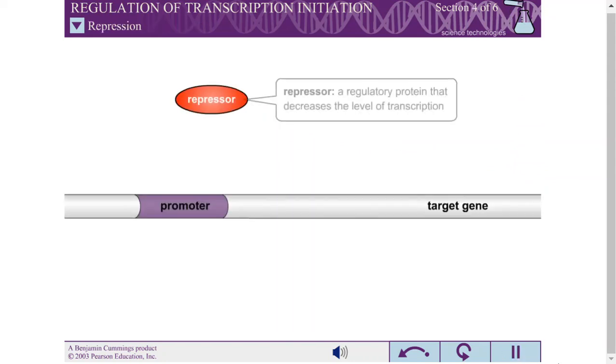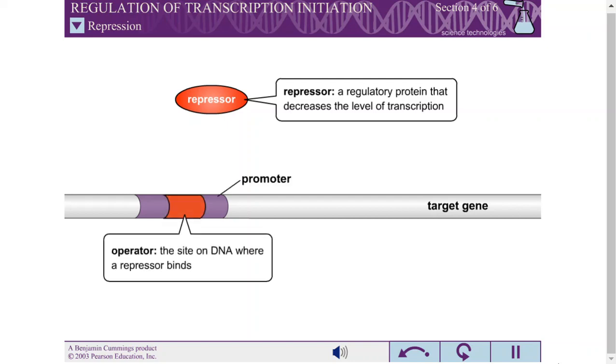A repressor is a regulatory protein that decreases the level of transcription. The site on the DNA where a repressor binds is called an operator.